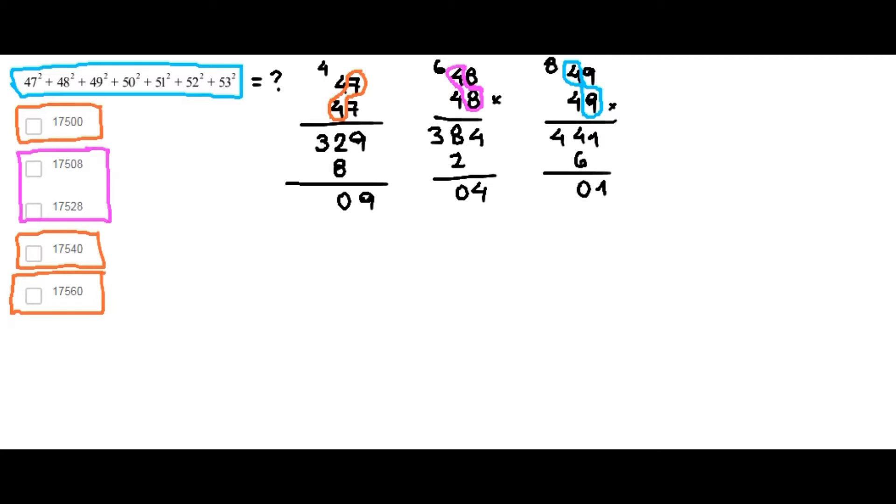50 squared, that's a number that can be rearranged like this. This is 50 times 50 or we can do the following. This is 5 times 10 times 5 times 10. So, we have 25 times 100. So, 50 squared is 2,500. So, units digit and 10's digit 0, 0.